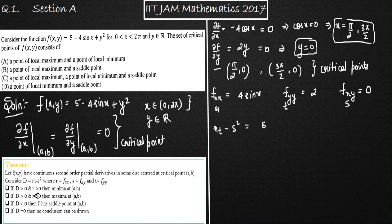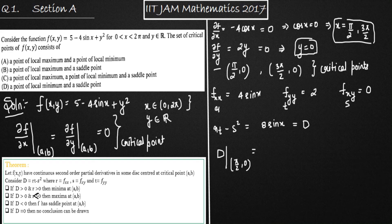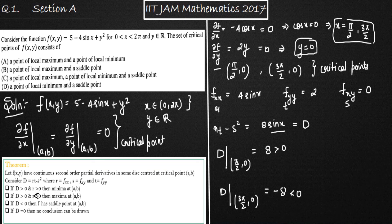So D = rt − s² = 8sin(x). This is the D our theorem talks about. Now at (π/2, 0), D = 8, because sin(π/2) = 1, so D > 0. At (3π/2, 0), D = −8, so D < 0. Since D < 0 at (3π/2, 0), using the third condition of the theorem, (3π/2, 0) is a saddle point.